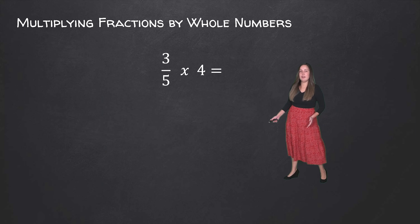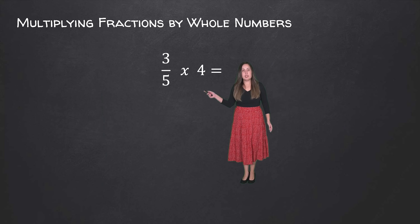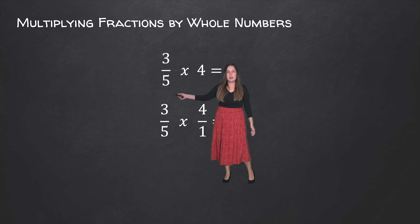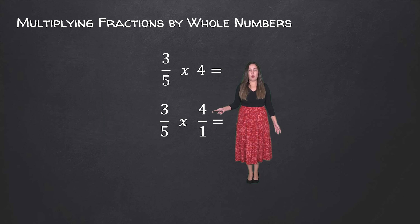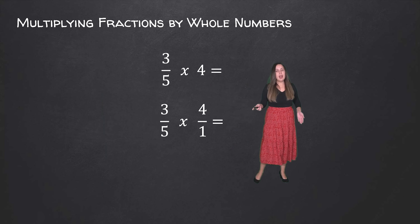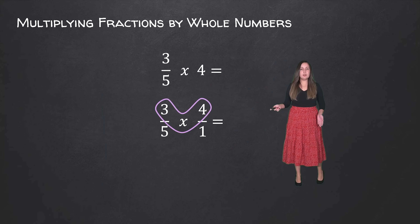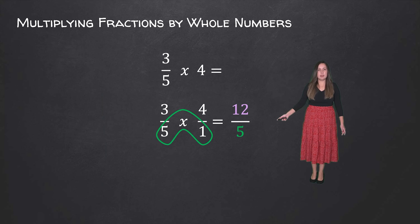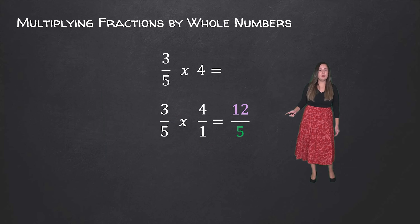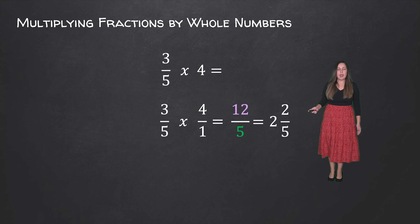If we didn't have a model, we would take both numbers and write them in fraction form in order to multiply. So 3 out of 5 is already in fraction form, and 4 can be written as 4 over 1. Then we multiply the numerators: 3 times 4 is equal to 12, and multiply the denominators: 5 times 1 is equal to 5. So 12 out of 5 is an improper fraction that can be written as 2 and 2 fifths.